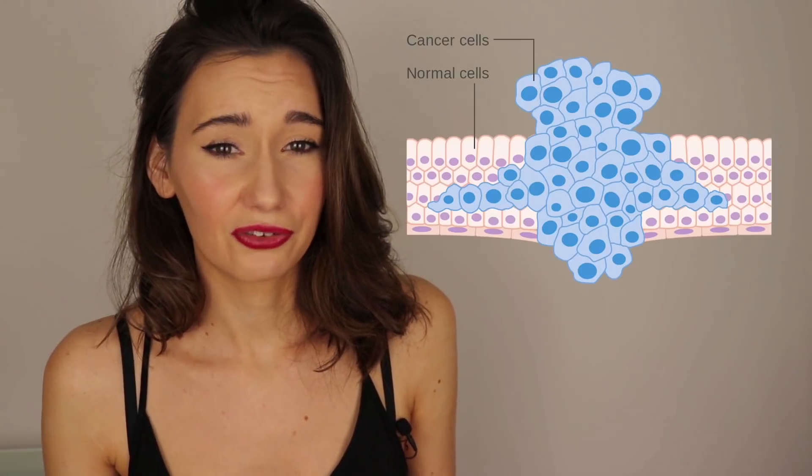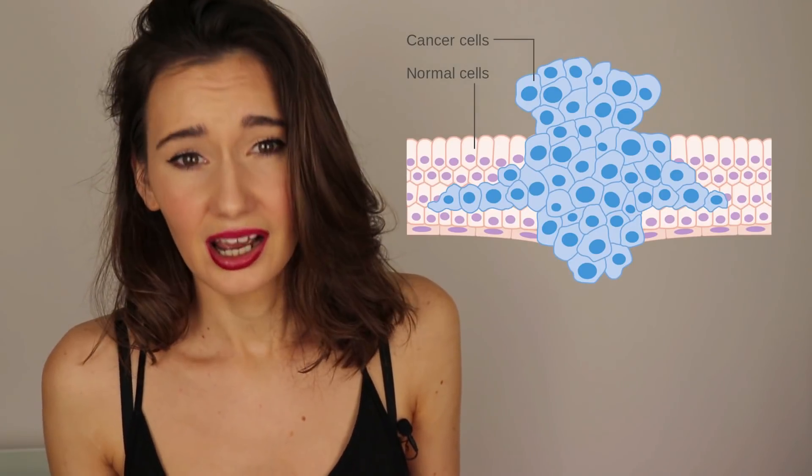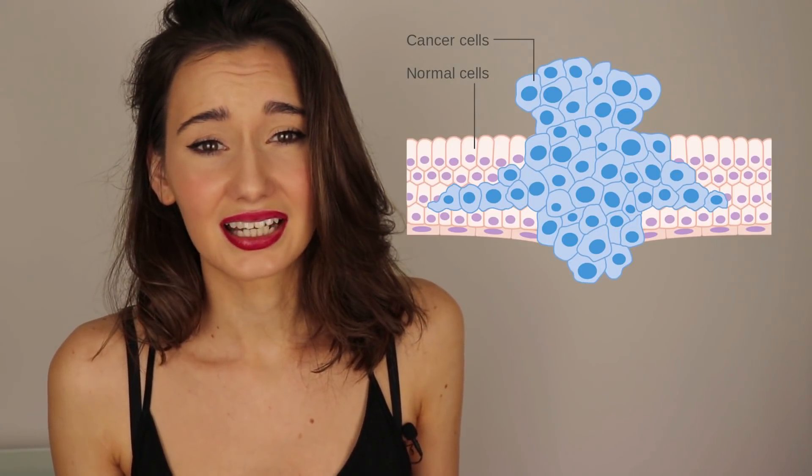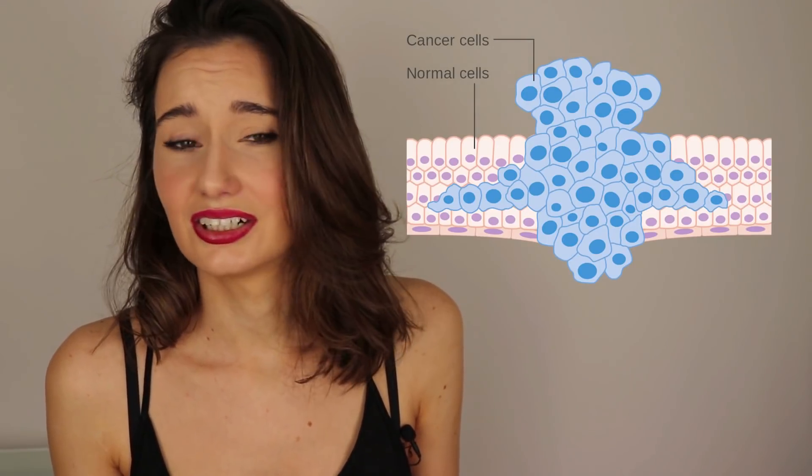In the start, the cells stay in the tissue where they first developed, for example in the bowel. This is called carcinoma in situ, and all tissues have a basement membrane which is a layer that keeps the cells within the tissue. Cancer cells can sometimes make their way through this membrane, and when this happens the cancer is then considered invasive.